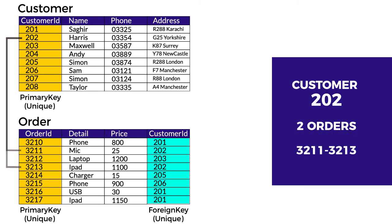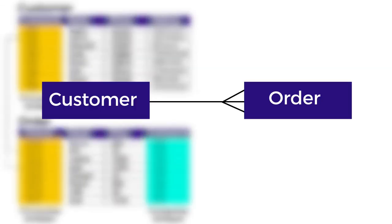With the help of these two tables, we can find the order details of any customer or the customer details of any order. Both tables are linked by the foreign key.